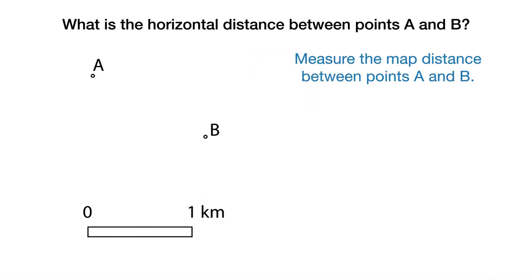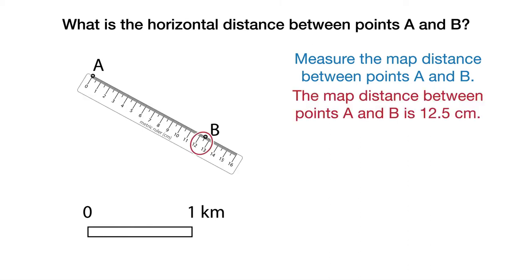Now we do the same thing to measure the map distance between points A and B. Carefully place the ruler and read the map distance between A and B. It's 12.5 centimeters.